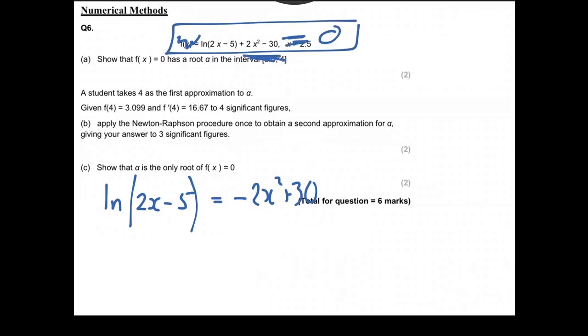So I've said roots are when this equation equals 0, and then I've put this bit of the equation on the other side. Now I can sketch both of these parts and see how many times they intersect each other. So I think we said it crossed at 3 and the asymptote was at 2.5.